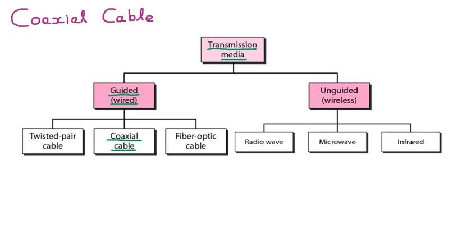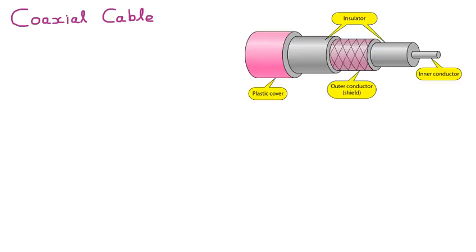There is a specific purpose for using this wire — many different frequencies, different channels can come through it. The coaxial cable transmits data at very high speed.